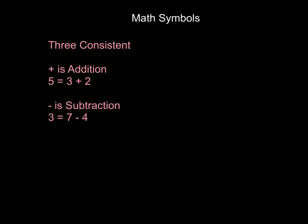The asterisk, which is the key above the 8, is for multiplication. That's what you always want to use. If you use the letter X, it's just going to mean the letter X, and the program will not like it. So 36 is equal to 6 times 6. These are the three consistent math symbols used throughout programming.